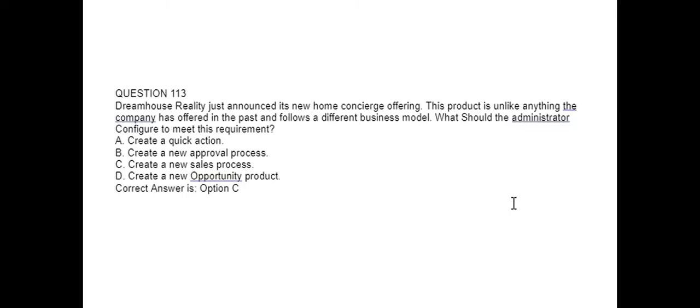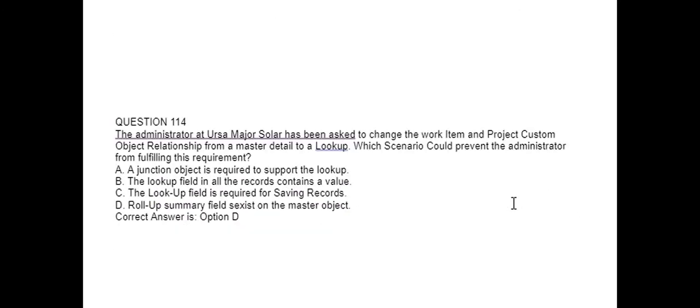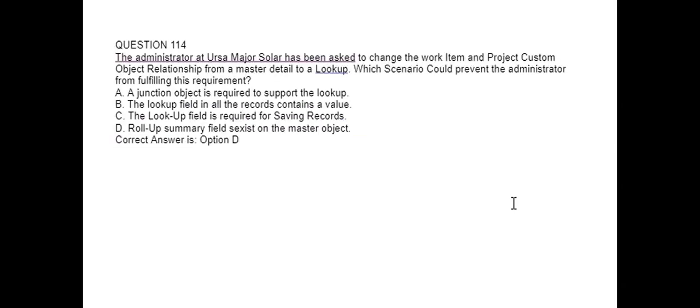Next question. DreamHouse Realty just announced its new home concierge offering. This product is unlike anything the company has offered in the past and follows a different business model. What should the administrator configure to meet this requirement? Option A: Create a quick action. Option B: Create a new approval process. Option C: Create a new sales process. Option D: Create a new opportunity cost. Correct answer is Option C: Create a new sales process.